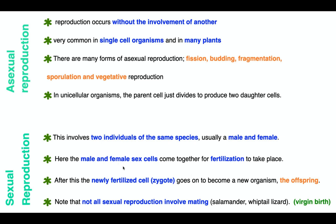For sexual reproduction, special cells called male and female gametes, or sex cells, come together for fertilization. After fertilization, the new cell produced is called a zygote, which then divides by mitosis repeatedly and becomes the new mature offspring. Interestingly, not all sexual reproduction involves mating. For example, salamanders and whiptail lizards exhibit virgin birth, where the mother provides both sets of DNA. The offspring are all female because the chromosome composition is XX.